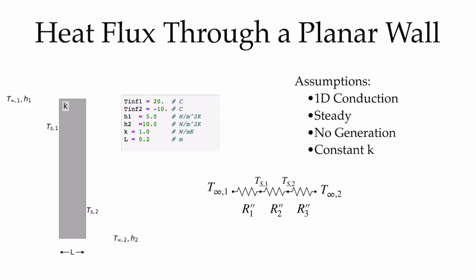It means that we can draw our resistance network from T∞1 to T∞2 through all of the different thermal resistances in the problem. R1 is our convection resistance on the inside, R3 is our convection resistance on the outside, and R'2 is the conduction resistance through the wall itself. All of these assumptions were necessary because they allow us to make this analogy with an electric circuit. We perhaps don't have to assume strictly that the conductivity is constant, but when we look at the conduction resistance, we'll have to use a suitable average conductivity for R2, and we need constant conductivity to interpret the temperature profile as linear through the wall.